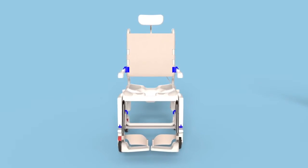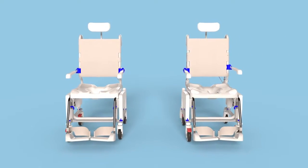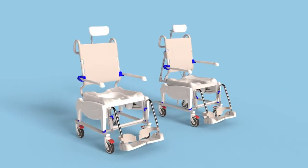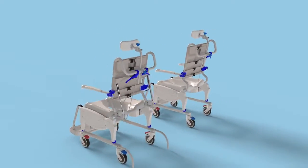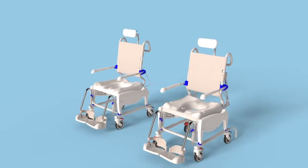The Ocean VIP Ergo and Ocean Dual VIP Ergo are both modular tilt-in-space shower chair commodes designed to suit a wide range of users and their postural needs.